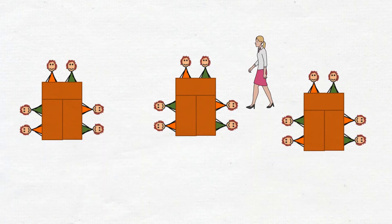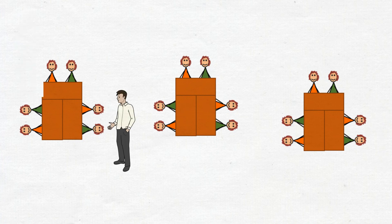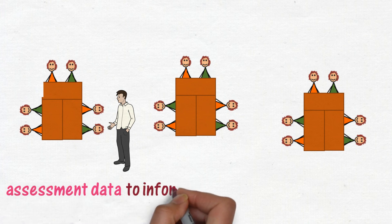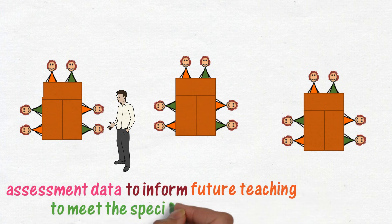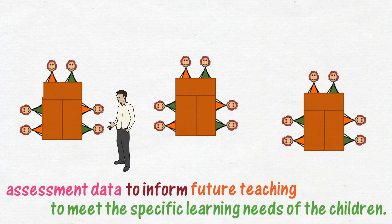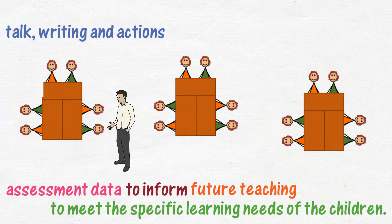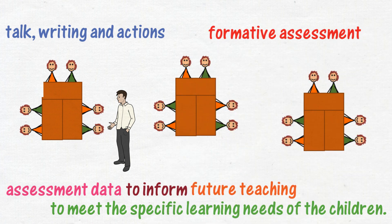Observing and questioning children as they investigate, listening as they explain their understanding to a friend, and collecting books at the end of each lesson all provide immediate assessment data, which can then be used to inform future teaching to meet the specific learning needs of the children. The children's talk, writing, and actions all display their current level of understanding. Thus, teaching and formative assessment are indivisible.